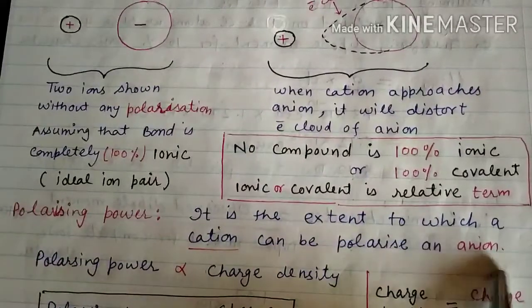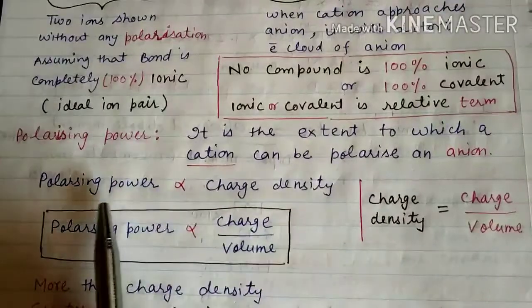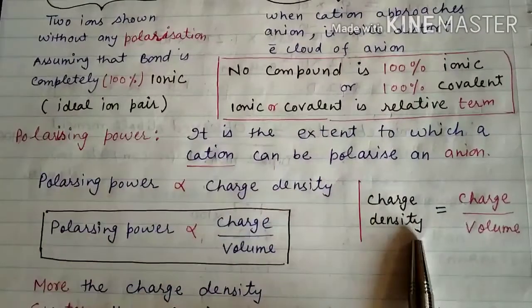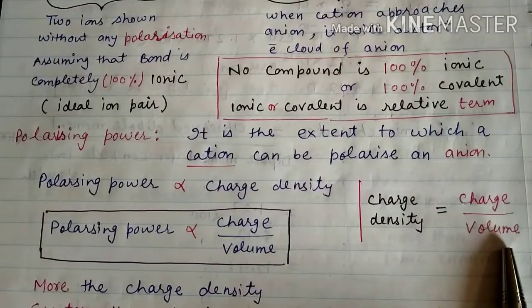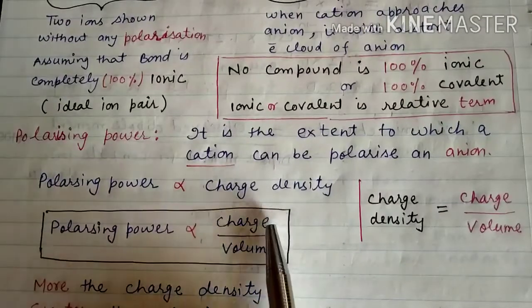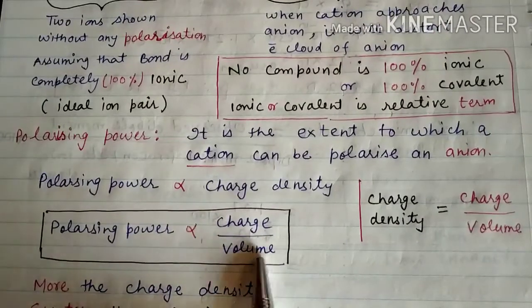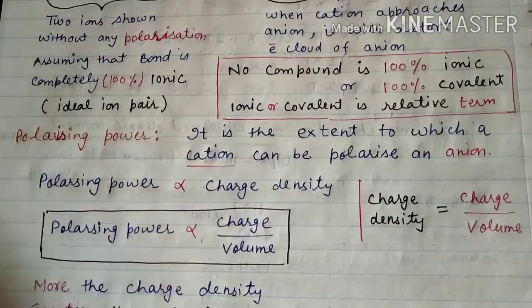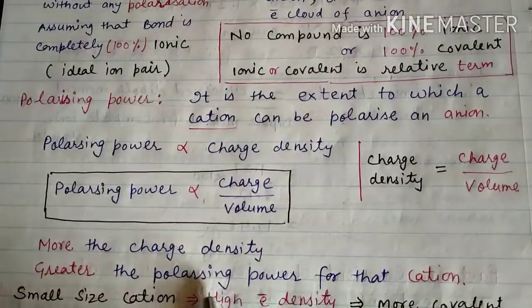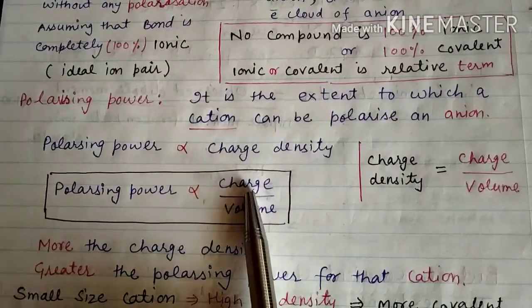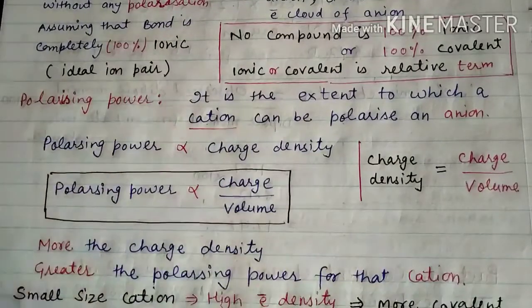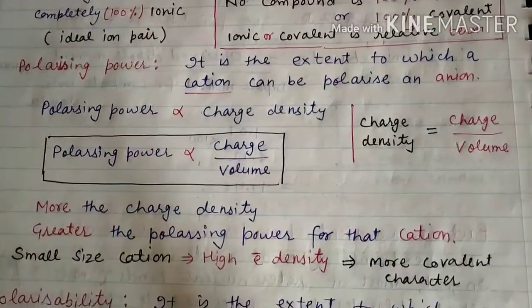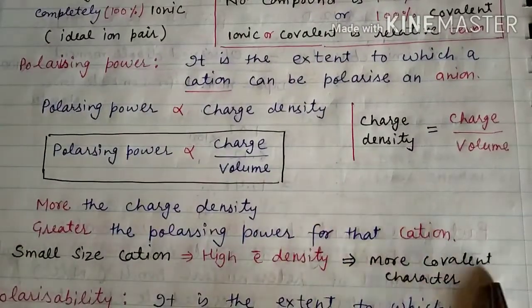Polarizing power is directly related to charge density, and charge density is the ratio of charge to volume. Polarizing power is directly proportional to charge divided by volume. Greater the volume, smaller will be the polarizing power; higher the charge, higher will be the polarizing power of the cation. Smaller the size of the cation, higher the charge density, and hence greater the polarizing power, leading to more covalent character.